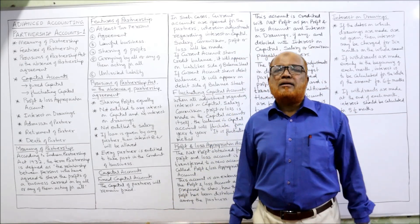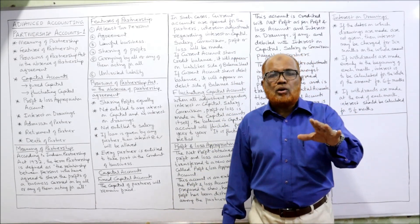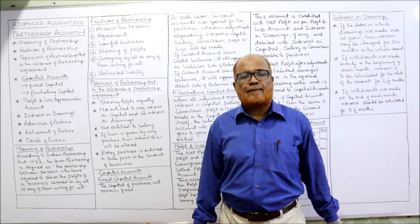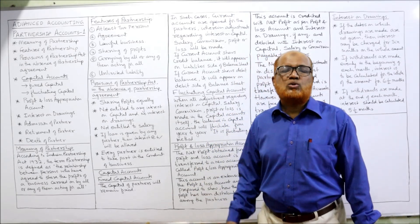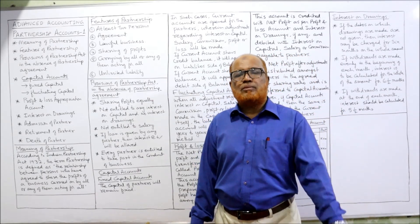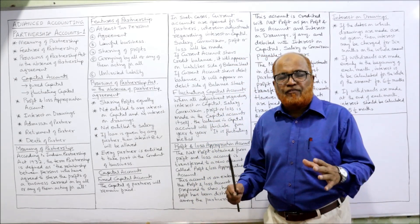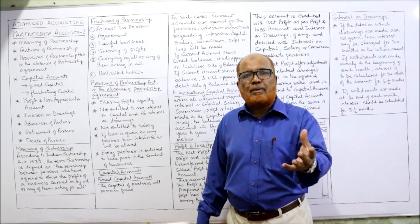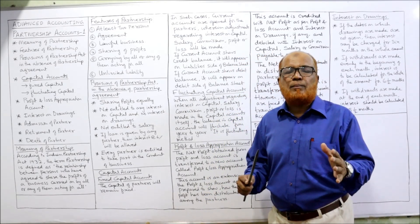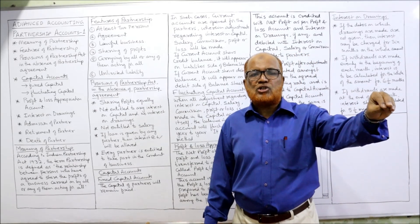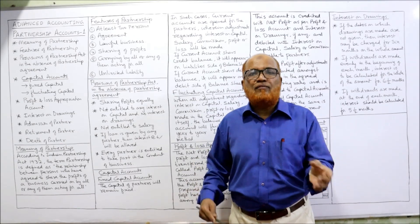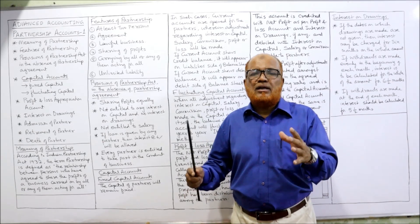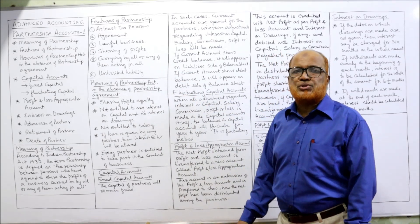Carrying on by all or any of them acting for all — every partner has a right to take part in the conduct of the business, or some partners will act on behalf of all other partners. That means if a partner has taken an action, it is assumed that this action is of all the partners, not a single partner. Then, unlimited liability: normally a partner's liability is unlimited. Not only business assets, but also personal property is liable to pay the debts and obligations of the business. But from 2008 onwards, a new act was passed in India — the Limited Liability Partnership Act 2008. If a firm is registered under LLP, it will have both the features of a partnership and a company. In that case, the liability of some partners will be limited, and personal property is not liable. But normally, we can say the partner's liability is unlimited.